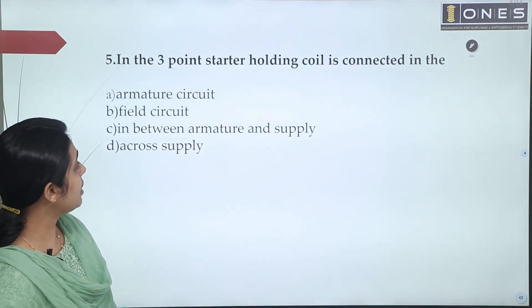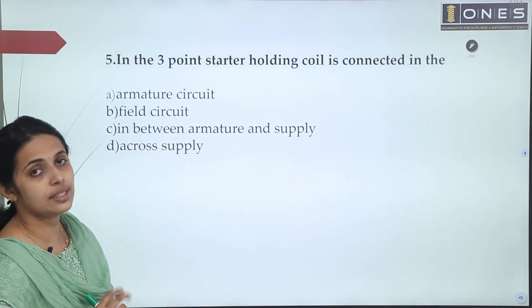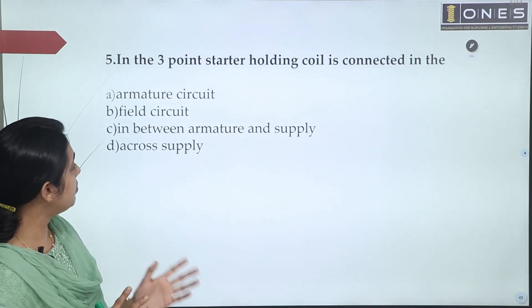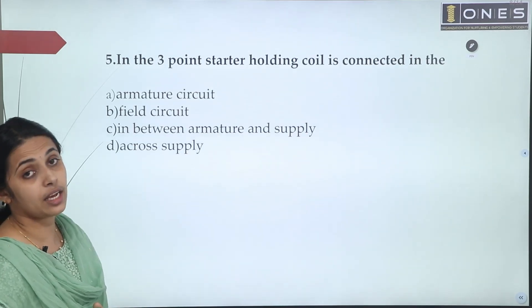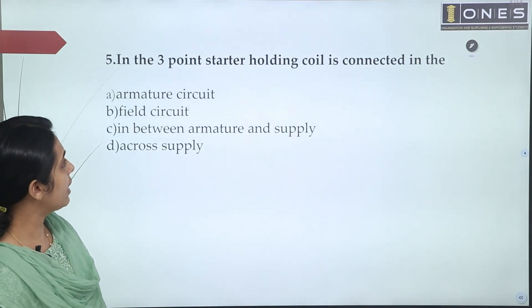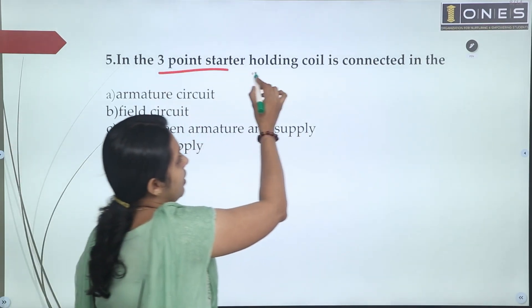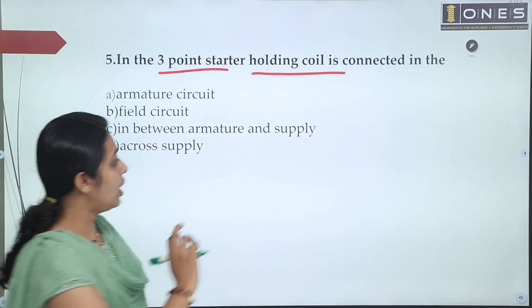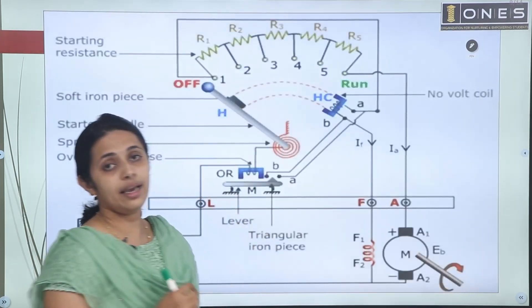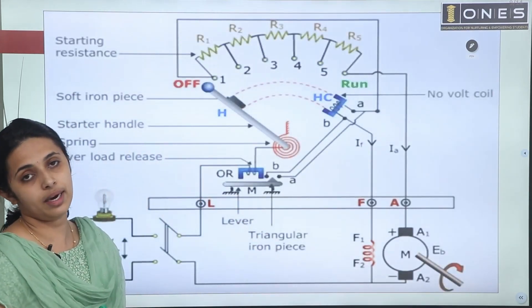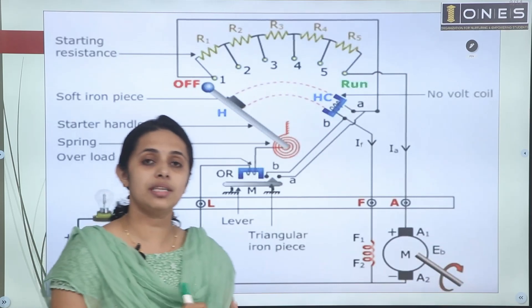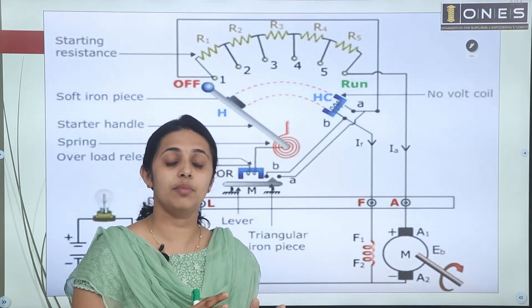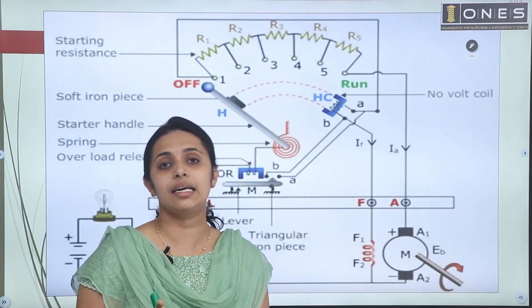Next question: In a 3-point starter, the holding coil is connected — options are: in the armature circuit, in the field circuit, in between armature and supply, or across supply. A 3-point starter is used to reduce the high starting current in a DC motor, by connecting external resistance in series with the armature at startup.